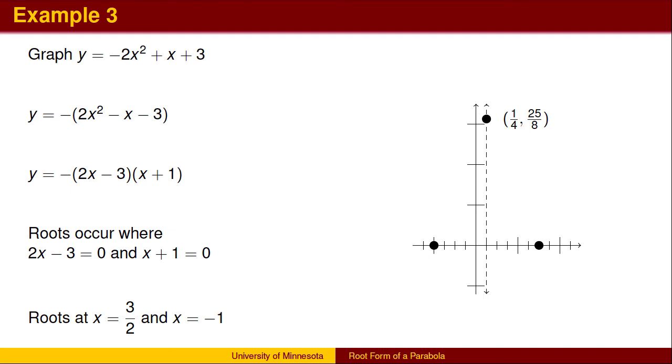Averaging the roots, we find the x-coordinate of the vertex to be at 1 quarter, and plugging 1 quarter in for x, we find the y-coordinate of the vertex to be at 25 over 8. We can then sketch the graph.